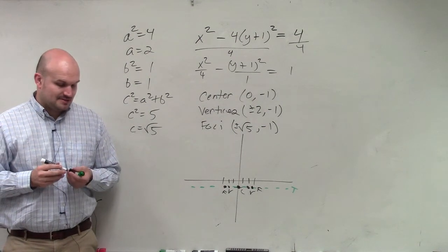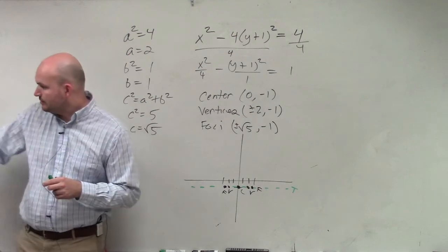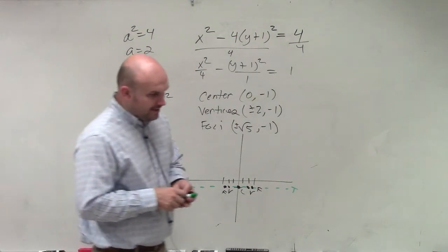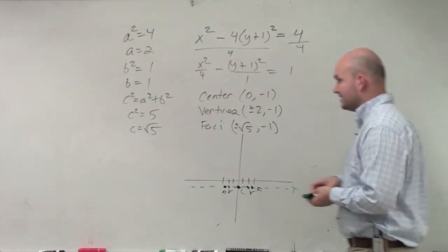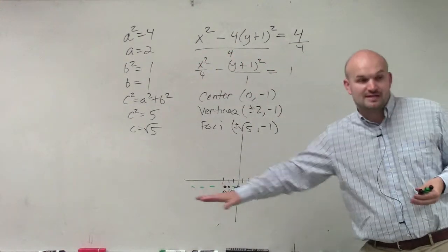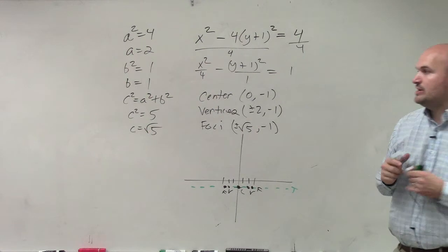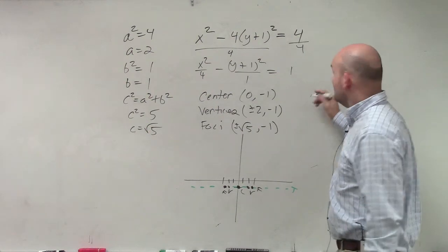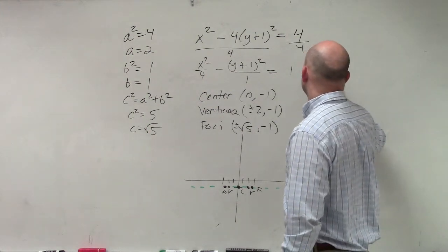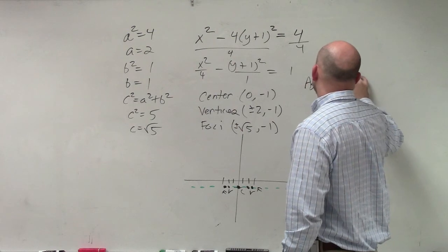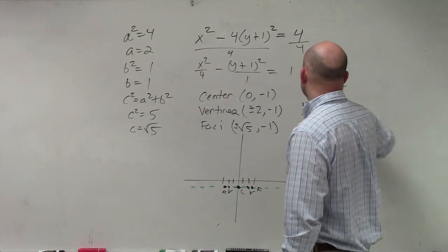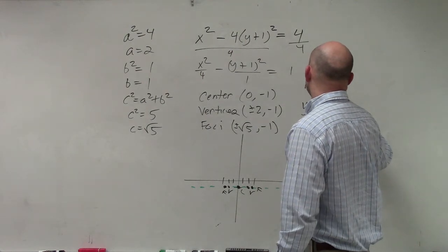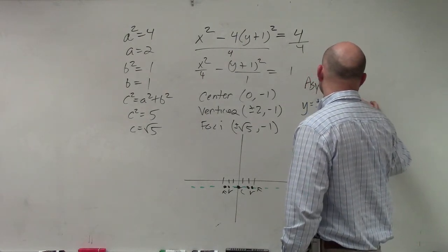And then last but not least is our asymptotes. So the equations of the asymptotes are over there, but I am going to show you how to graph them in a second. So this is a horizontal transverse axis. By the equation of my asymptotes, the asymptote equation looks like this: